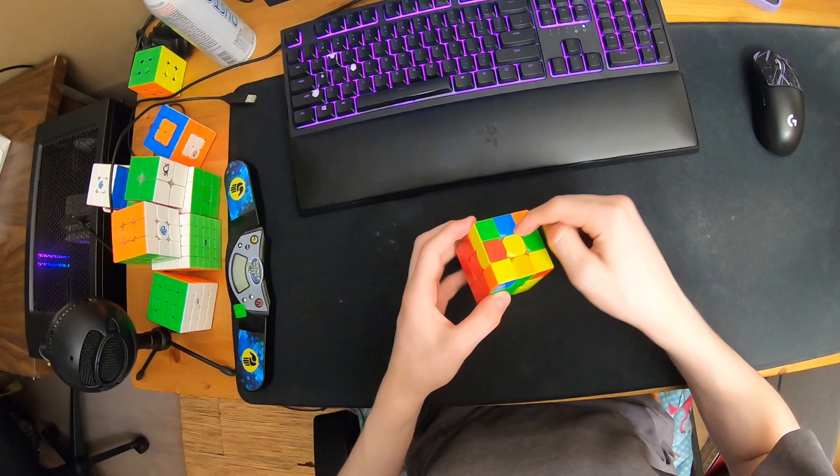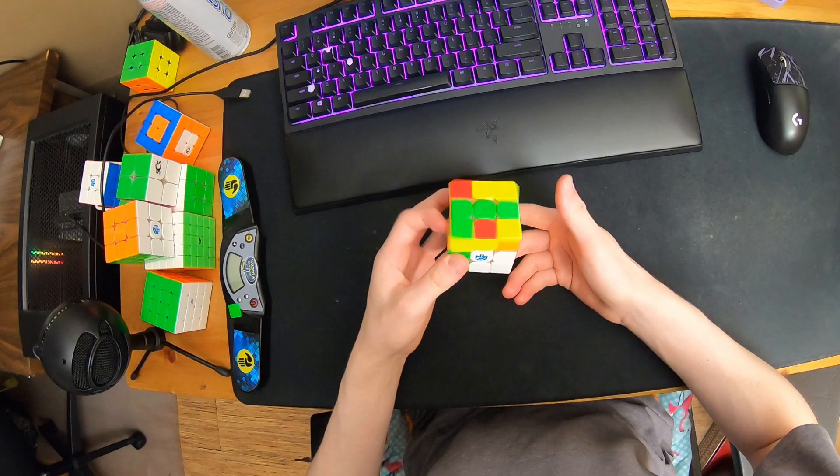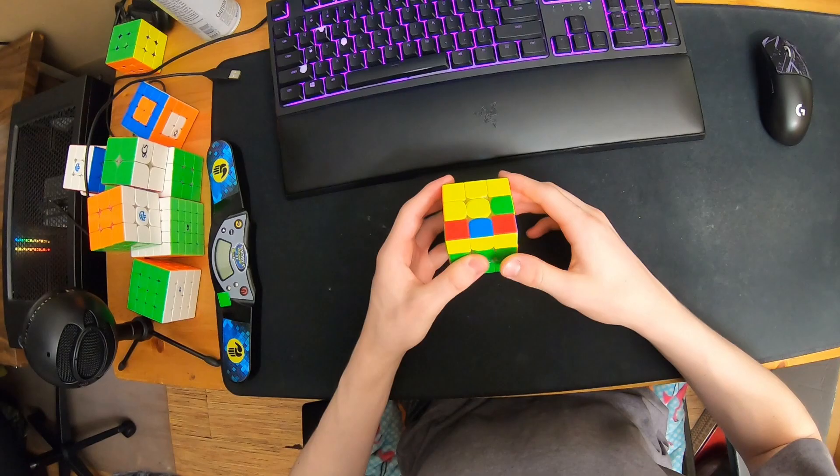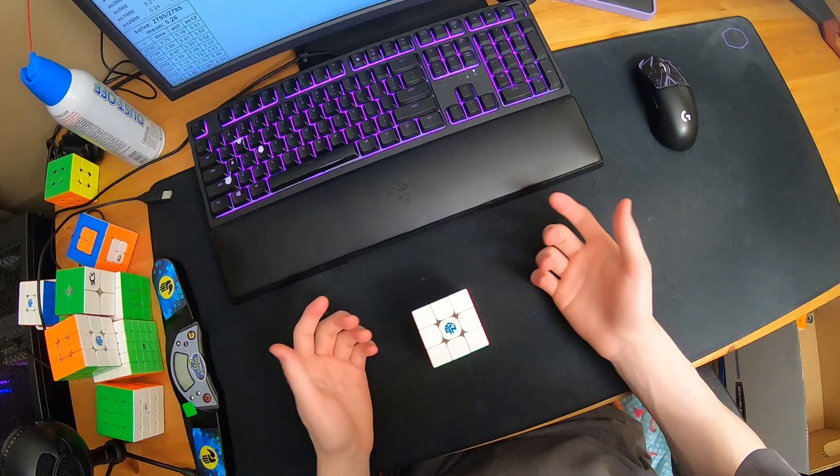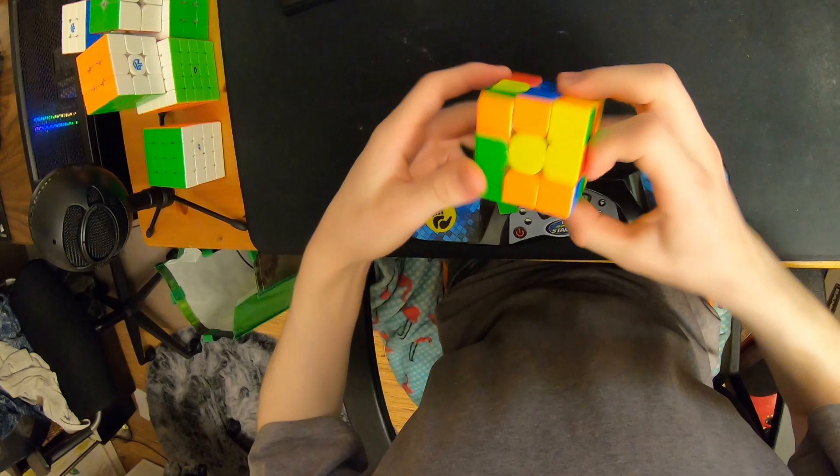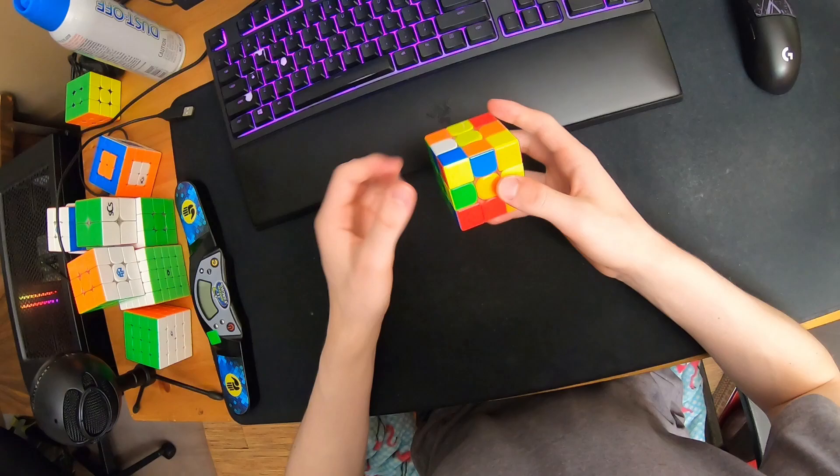I see this OLL and it just looks like a PLL skip because of this block and this pattern and stuff. D prime, AUF. That was 38 moves in 3.24, so 11.7 TPS. Okay, so number four, this was a 3.58.